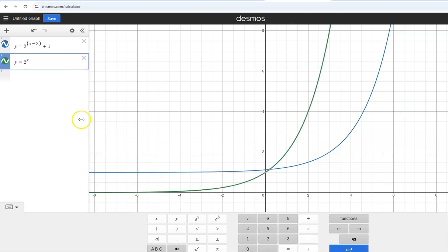So if you compare these two, here's y equals 2 to the x in green. Then you can see that this goes through the point 0, 1 right here.